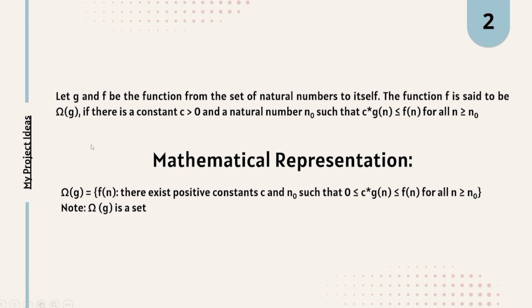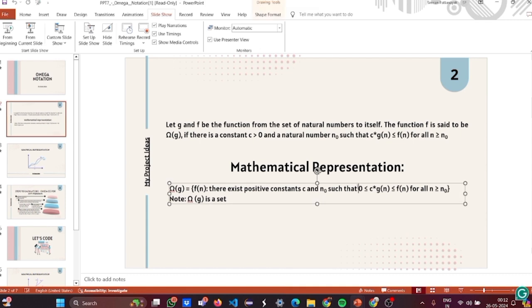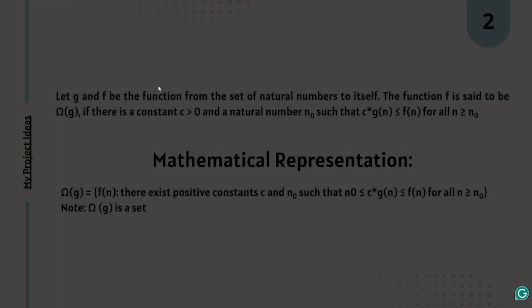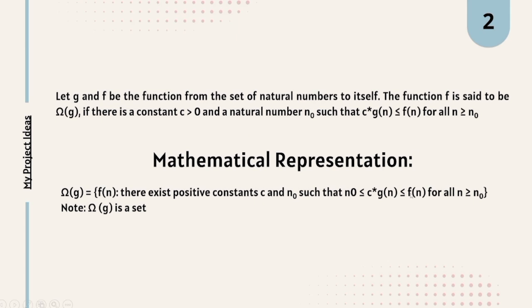In set builder form, Omega of G is equivalent to: F of N such that there exists a positive constant C and N0 such that C times G of N is less than or equal to F of N for all N greater than or equal to N0. Omega notation covers both the lower bound and upper bound, so it is restricted to a certain range — C times G of N is restricted between N0 and F of N for all N greater than or equal to N0.